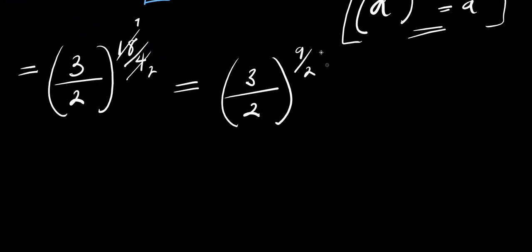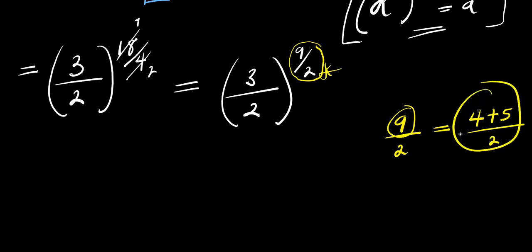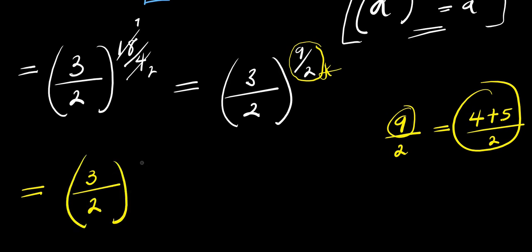Now the next step will be for us to consider this 9 over 2. If you have 9 divided by 2, we can express this 9 as the sum of 4 and 5 divided by 2. So 9 divided by 2 is the same thing as writing 4 plus 5, divided by 2. So from here we have 3 divided by 2, raised to the power of 4 plus 5 divided by 2.